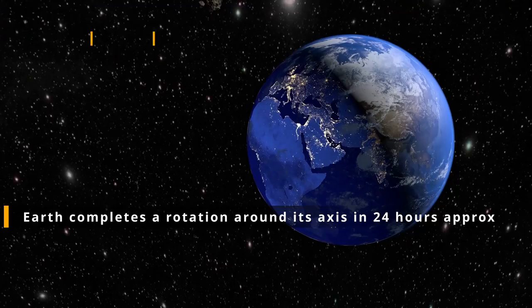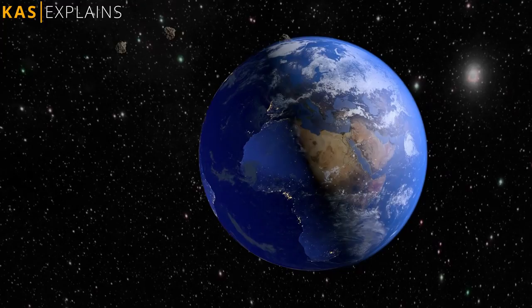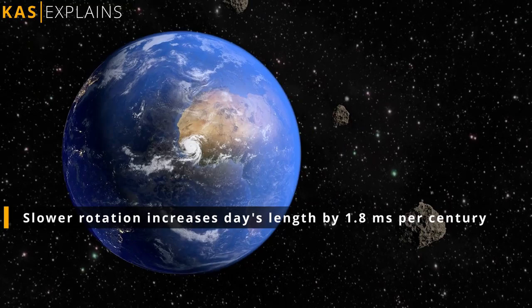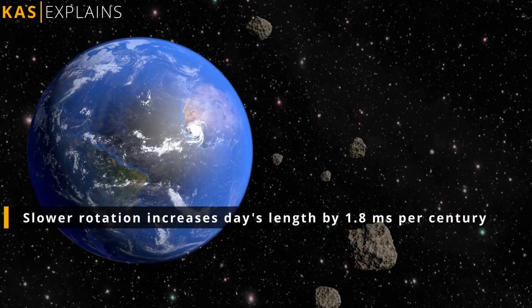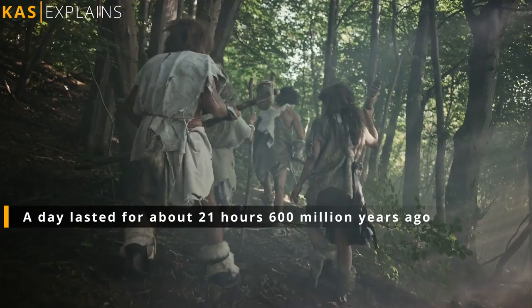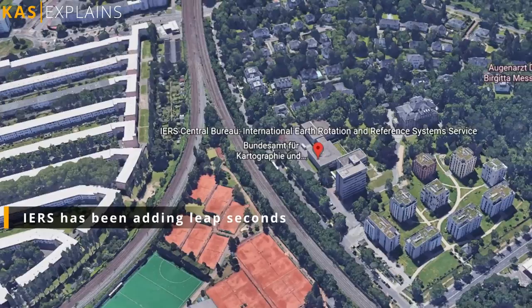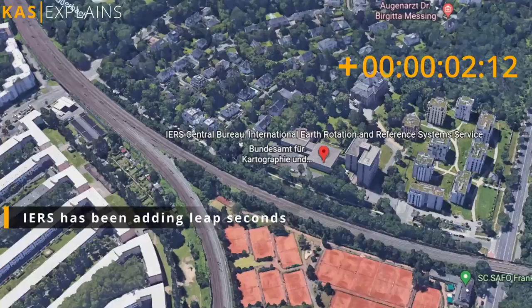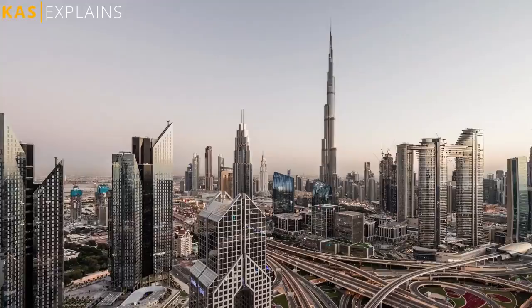Our planet revolves around its own axis once every 86,400 seconds, or 24 hours to be exact. Well, not exactly. It does not rotate in a uniform manner. Earth's rotation actually has been slowing down, so a day's length increases by 1.8 milliseconds on average per 100 years. In perspective, around 600 million years ago a day lasted for about 21 hours. To make up for the slower spin, the International Earth's Rotation and Reference Systems Service has been adding leap seconds every once in a while. It happened last on December 31st in 2016.